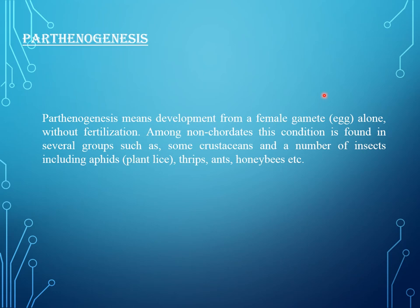Parthenogenesis: development from a female gamete alone, without fertilization by any male gamete. Among non-coordates, this condition is found in several groups such as some crustaceans and a number of insects including aphids, thrips, ants, and honeybees.